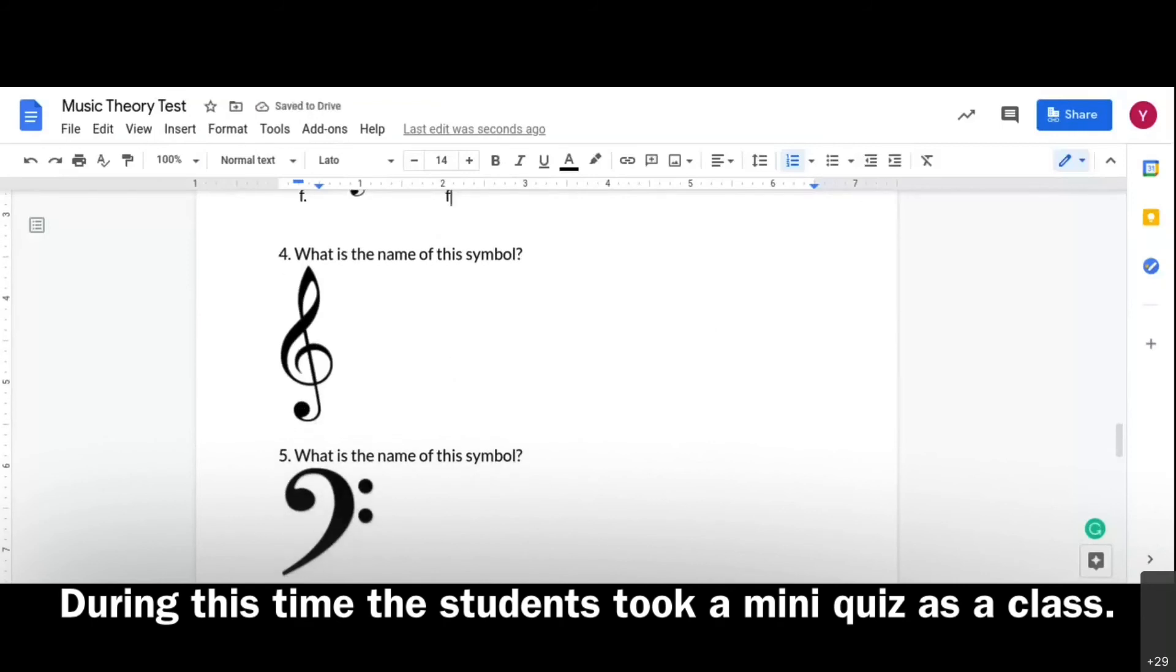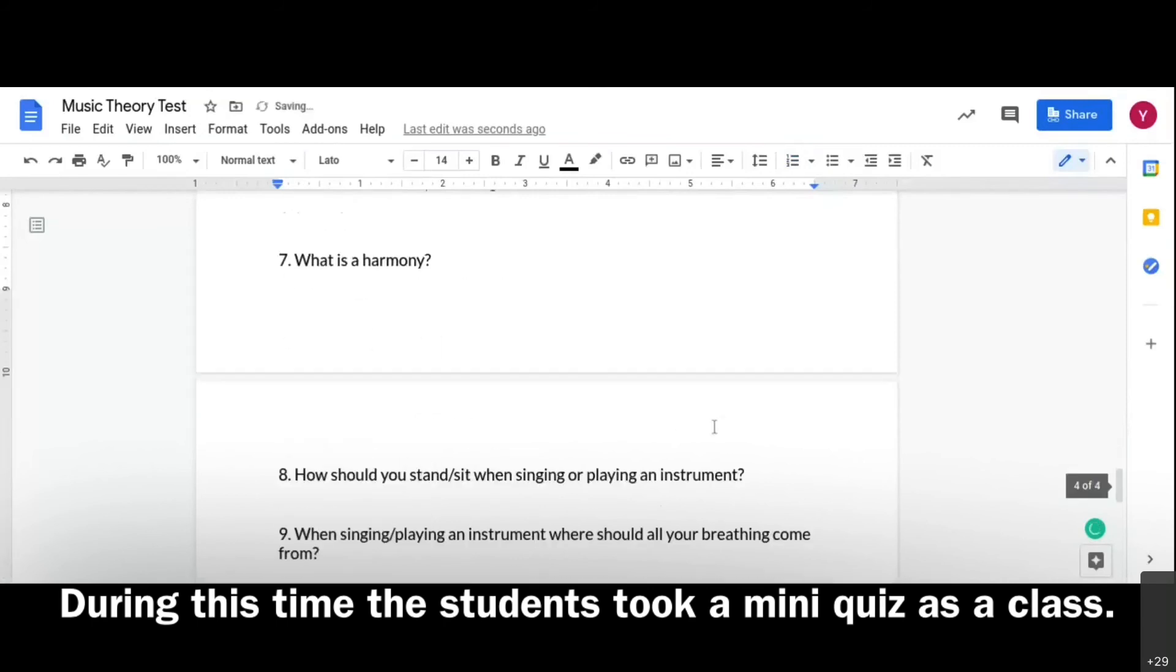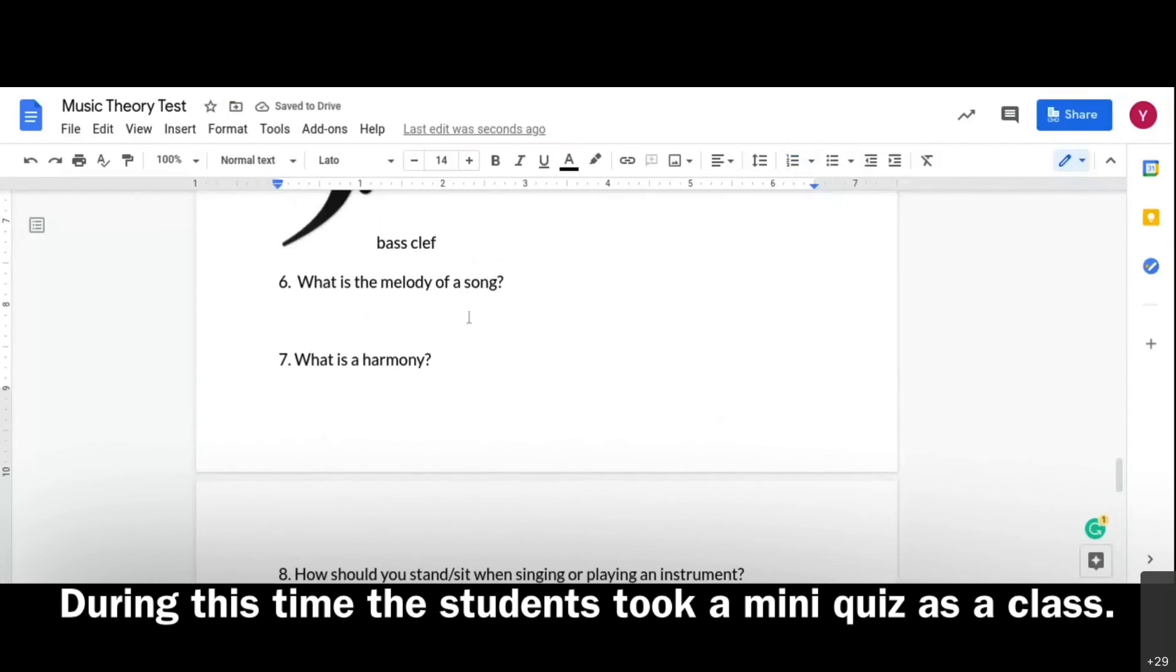Now question number four. What is the name of that symbol? Treble clef, treble clef, perfect. And what about number five, what is the name of that symbol? Bass clef? Bass clef, yeah. That's the bass clef symbol. What's number six? Is that a melody? No, not quite. Remember that thing I talked about with Mary Had a Little Lamb, what's the part that you remember the most?